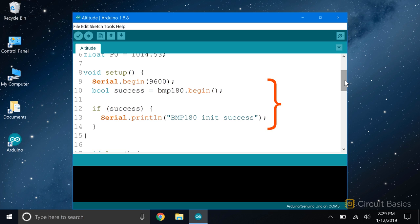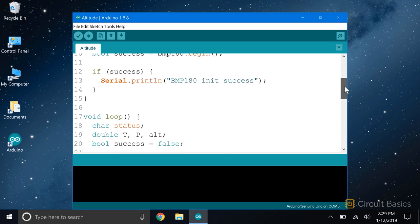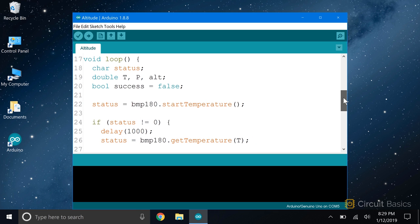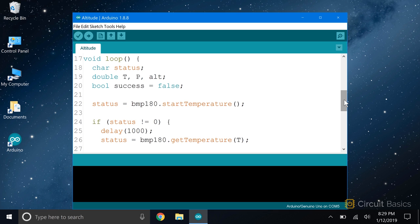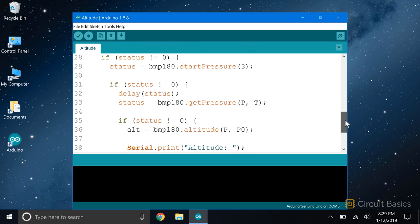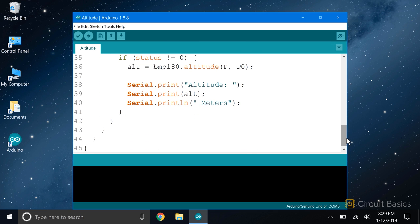In the setup, we initialize the serial monitor and the sensor. In the loop, all of the variables are the same, except for this double variable called ALT. ALT will hold the altitude measurements. We still need all of these if statements to get the temperature and pressure readings from the sensor.